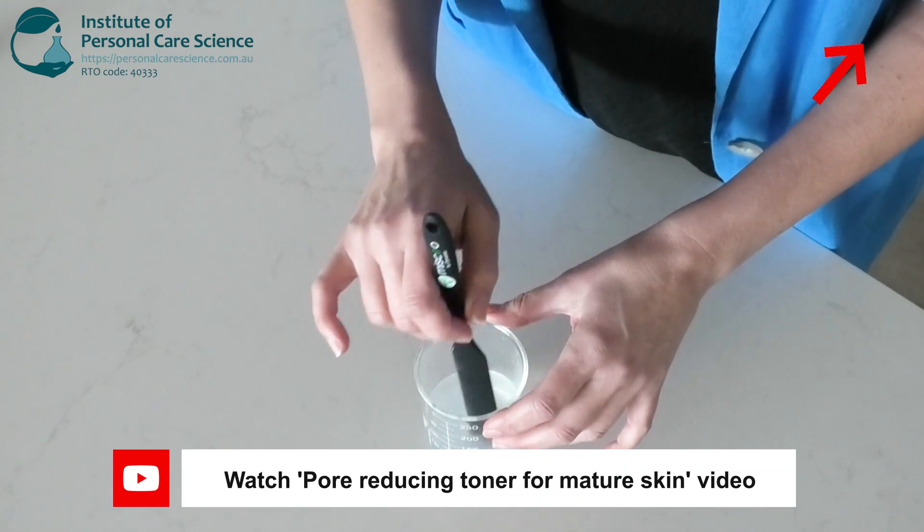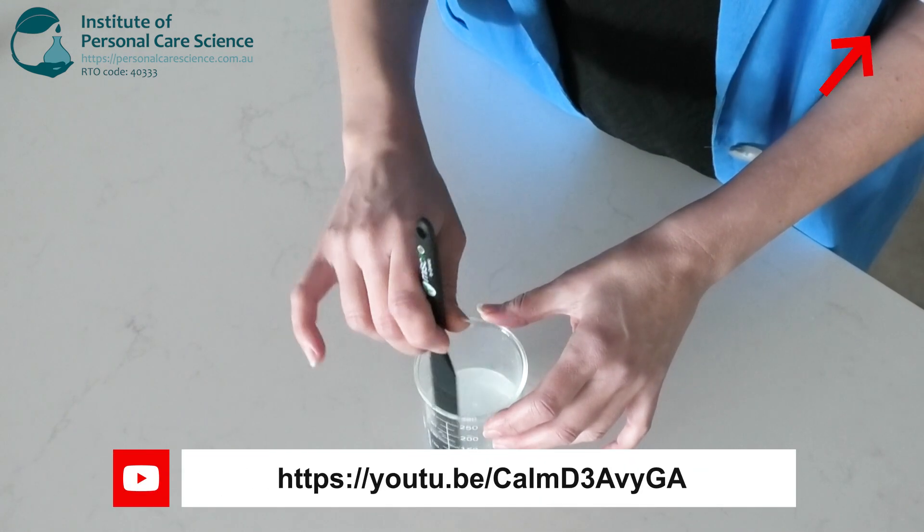Now I will gently combine the two phases before checking and adjusting the pH and pouring off.